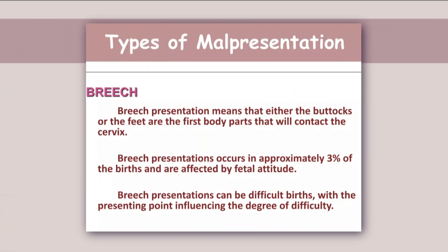Among the types of malpresentation, breech presentation means that either the buttocks or the feet are the first body part to contact the cervix. Breech presentation occurs in approximately 3% of births and is affected by fetal attitude. Breech presentation can result in a difficult birth, with the presenting part influencing the degree of difficulty.